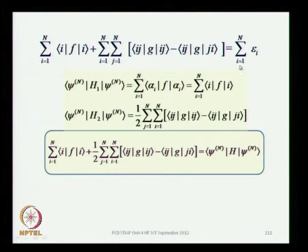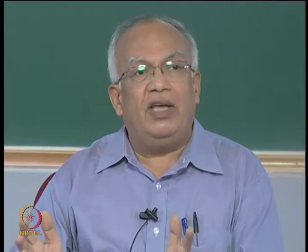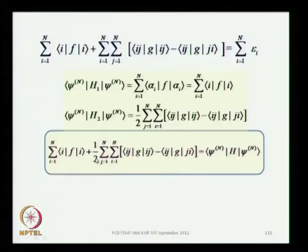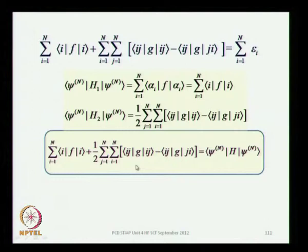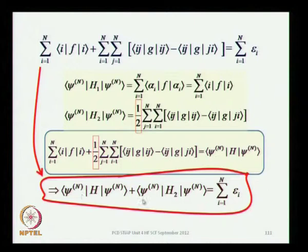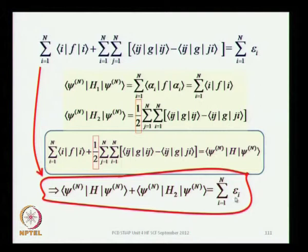The sum of ε_i from i = 1 to n — where ε_i are the diagonal elements of the Lagrange multiplier matrix — does not directly give the total energy of the n-electron system. The difference is a factor of one-half on the two-electron terms: the energy E = ⟨H⟩ equals the sum of ε_i minus the expectation value of the two-electron part H_2. So the sum of the Lagrange multipliers ε_i equals the expectation value of the Hamiltonian plus the expectation value of H_2.